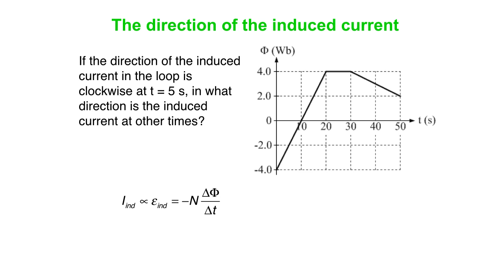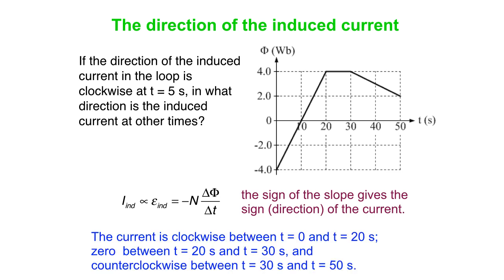We have induced current proportional to induced voltage, which is equal to minus n delta flux over delta t. So the sign of the slope gives the direction of the current. If we tell you that the direction of the induced current is clockwise at t equals 5, then you can see the slope is positive at t equals 5. It's positive everywhere between 0 seconds and 20 seconds.